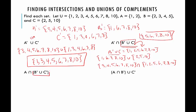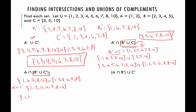Starting with the first one, we compute B complement union C complement. B complement is 1, 6, 7, 8, 10, unioned with C complement which is 1, 3, 4, 6, 7, 8, giving us 1, 3, 4, 6, 7, 8, 10. Now we intersect that with A, which is just 1 and 2. What do they have in common? Just 1. So the answer is the set containing the element 1.